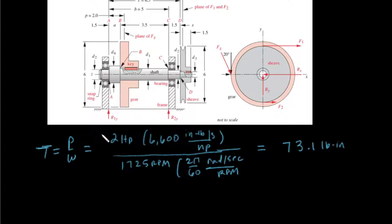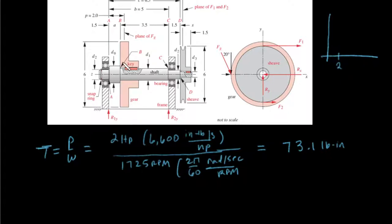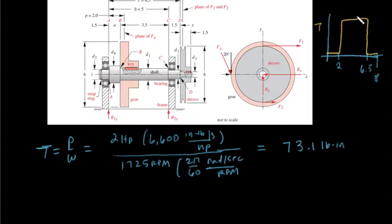Looking at the torque diagram: from zero to two inches the torque is zero, then it jumps up to the applied torque where the gear picks it up, and then comes back down. From two inches out to six and a half inches (center of the sheave) we have the full torque, and then it goes to zero at the end of the shaft at eight inches.